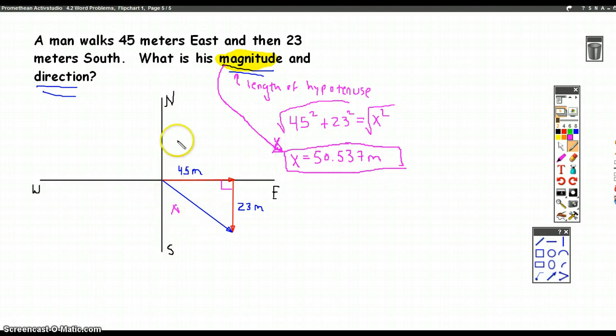Now, the other big question is, what is his direction? So there's many ways to describe direction, but one of them is angles. So if I said to you, you know, 23, if I said to you, 20 degrees, 20 degrees north of west.